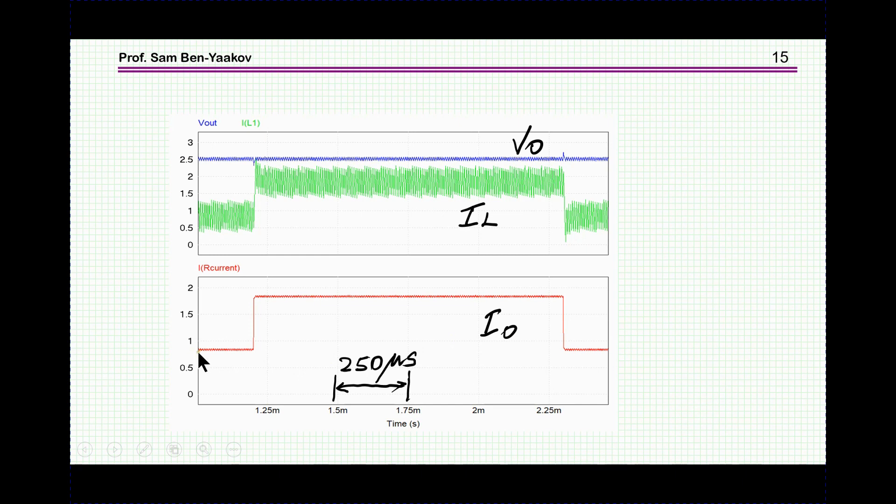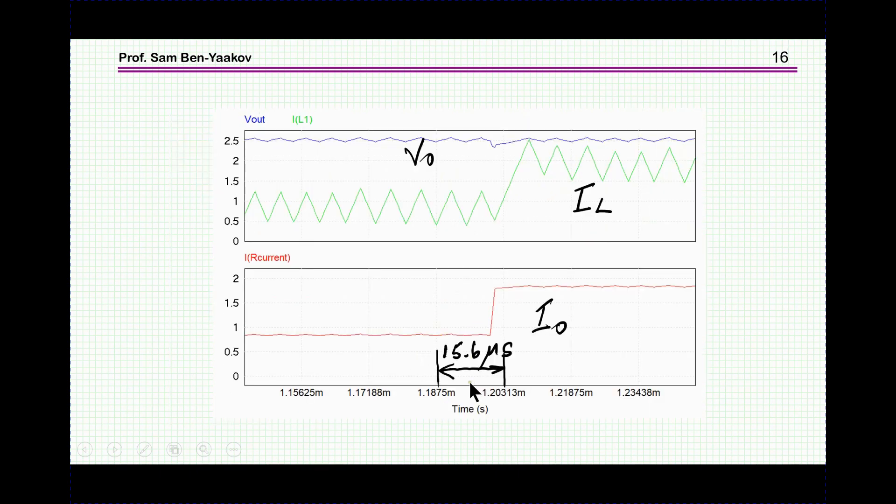So here it is. What we see here is a step response in the output current from just below one amp to just below two amp, say one amp jump, with the rest value of just below 0.7 amp. Resolution of time division here 200 microseconds, it's about one millisecond. This is the inductor current, we see the ripple. And this is the output, this is the output ripple, and here are the disturbances while we have the step here and the step down here.